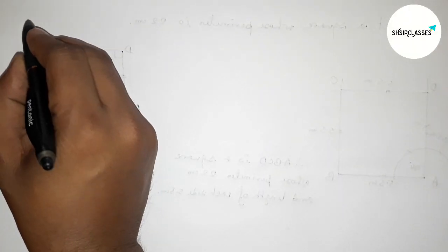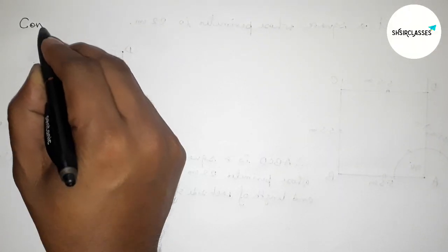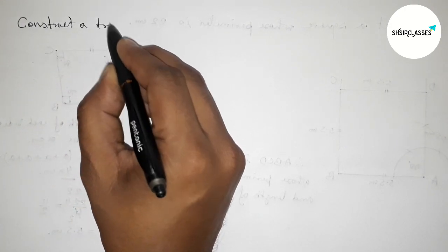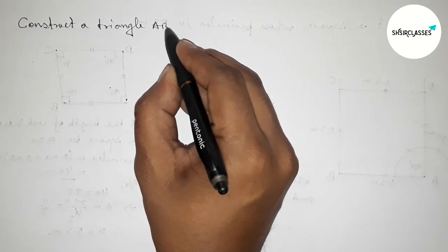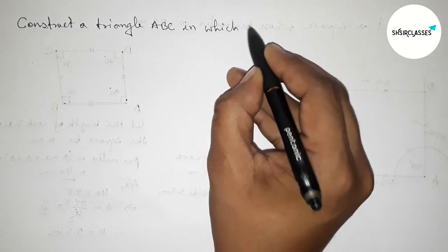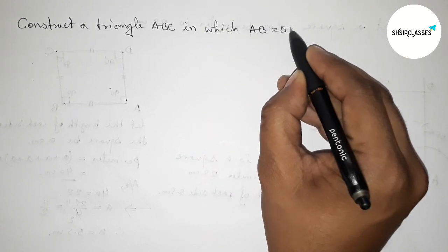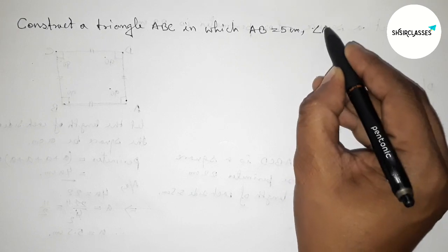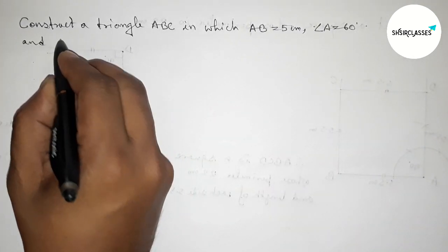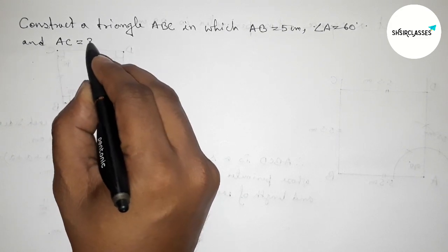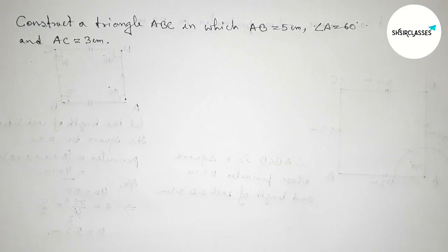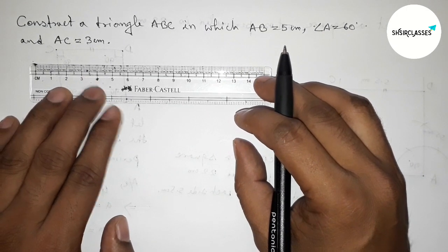Hi everyone, welcome to SI Share Classes. Today in this video we have to construct a triangle ABC in which AB equals 5 centimeters, angle A equals 60 degrees, and AC equals 3 centimeters. Please watch the video till the end. Let's start.